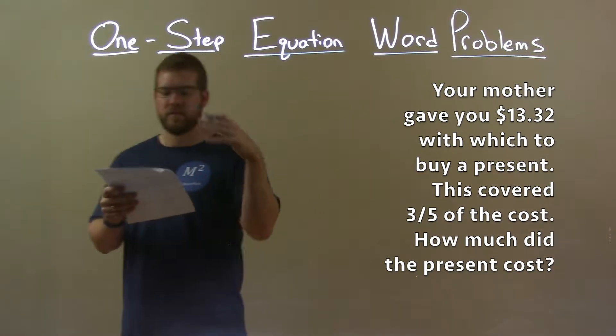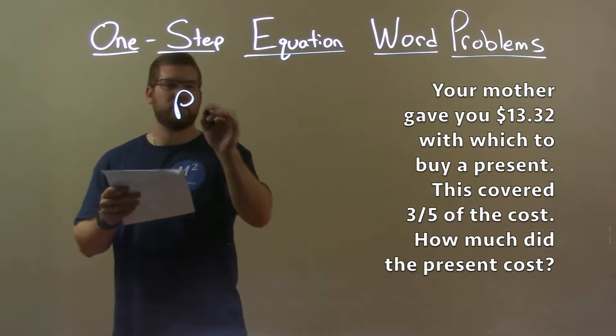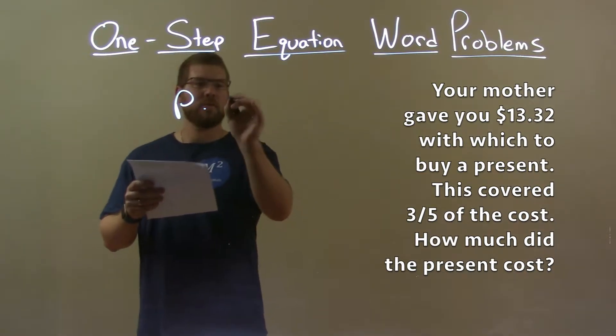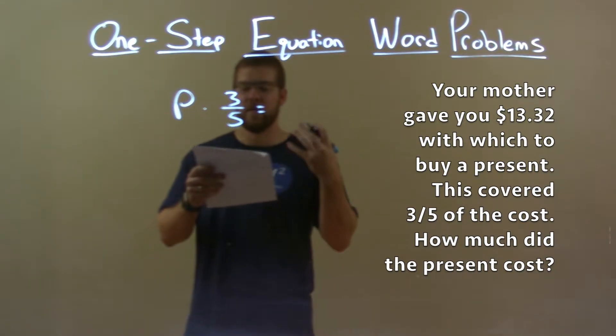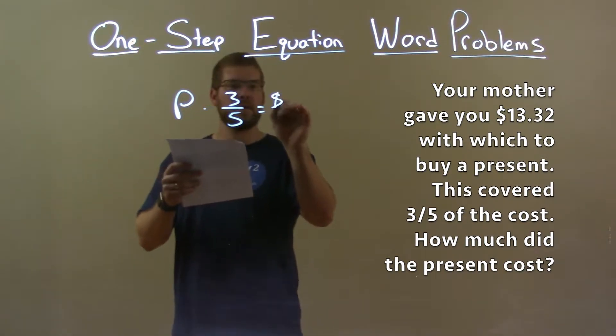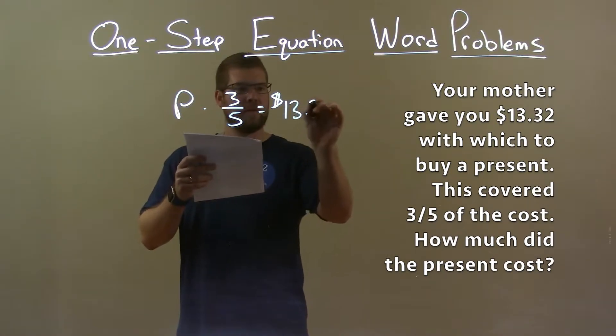The cost of the present, let's write an equation here. The cost of the present, P, times three-fifths will equal the amount of money your mother gave you, which is $13.32.